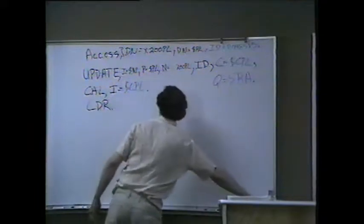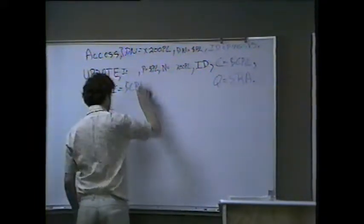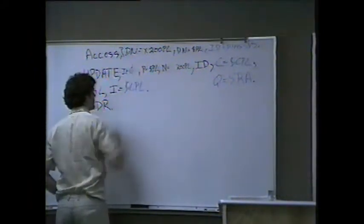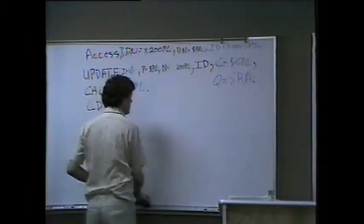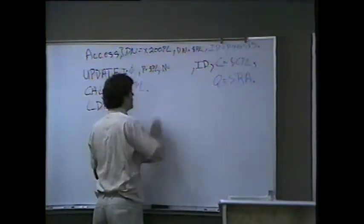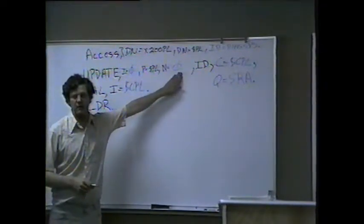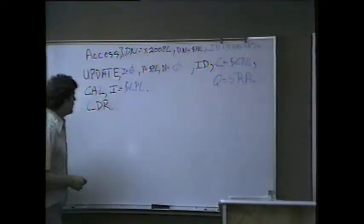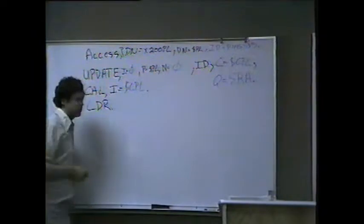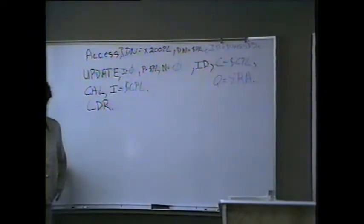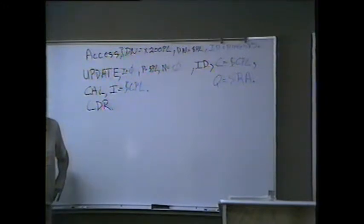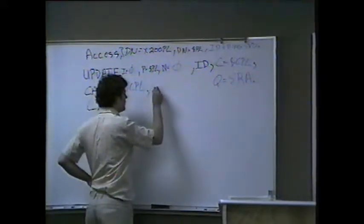This is going to come out across the screens and you probably won't get to this today. But let me show you what it looks like. We're going to do SRA, we're going to access PDN equals 200, X200PL DN equals PL, ID equals DIAG SIS. For update, we don't have any directives — all we want to do is get a listing. So we'll make that equal to zero. We don't need a new library; all we're doing is getting a listing out of the old library, so we make N equal to zero.